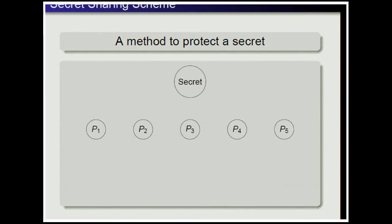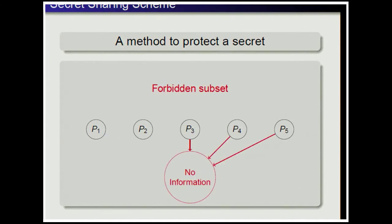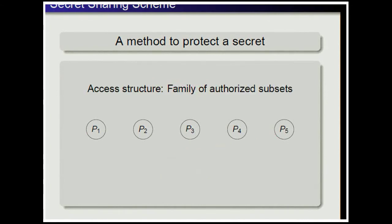A secret sharing scheme is a method to protect a secret. The dealer generates pieces of information from the secret called shares, and sends privately one share to each participant. These shares are generated such that some subsets of participants can recover the secret — these are called authorized — and some subsets cannot obtain any information about the secret, called forbidden. We define the access structure as the family of authorized subsets.